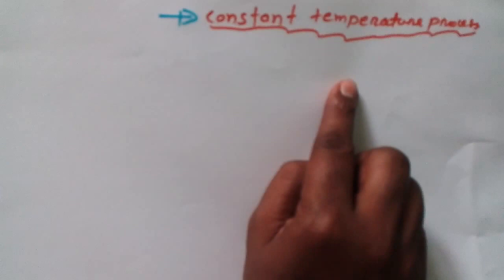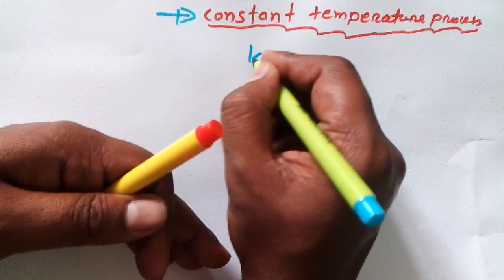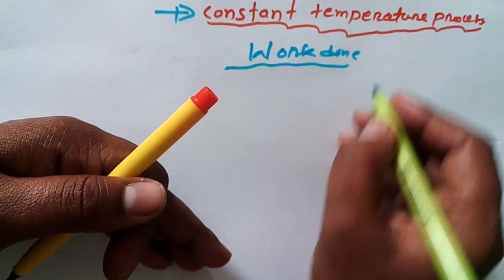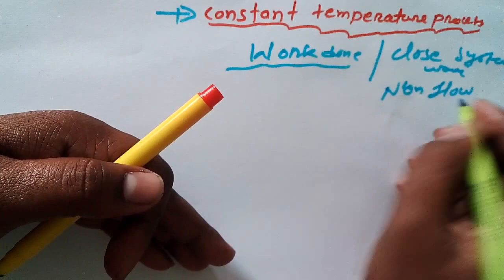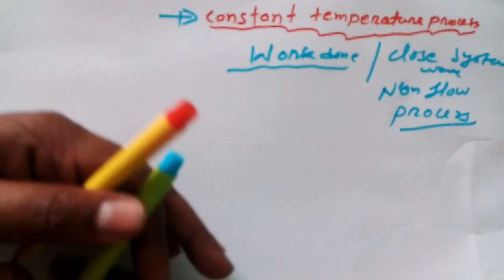It's constant temperature process, but today I'm going to share with you the expression for how to find out work done in this process, in case of closed system work, or the other name of this is non-flow process.